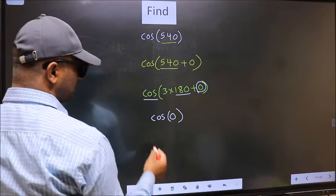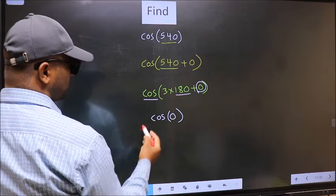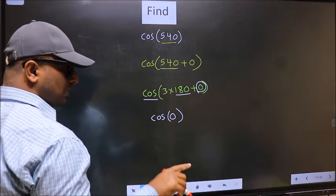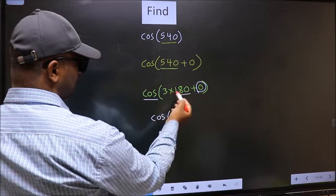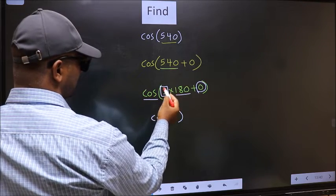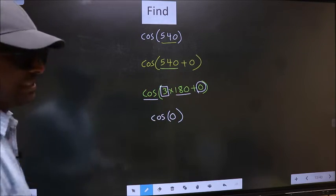Now the question is, will we get here plus or minus? To answer that, we should look at the number before 180. That is 3. And 3 is odd.